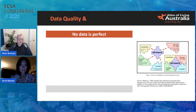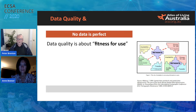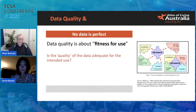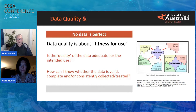No dataset is actually perfect. Decisions about whether to use it in research are really governed by its fitness for use. Different quality data can be used for different purposes; the more accurate a dataset is across all six factors, the more useful it is across more different applications. Things to think about: Is the quality adequate for the intended use? How can I know whether it's valid, complete, consistent, how it's collected and treated? That's all described in the metadata, which is quite important for downstream users to make informed decisions.